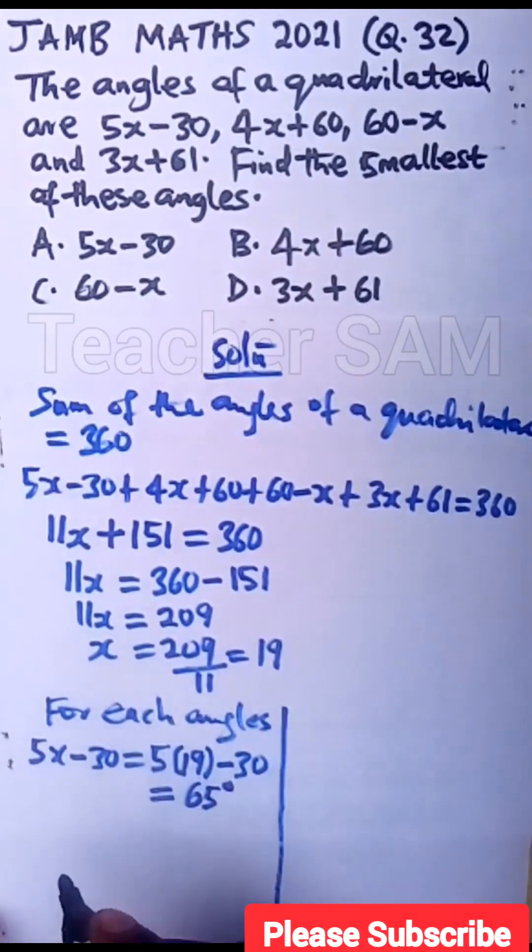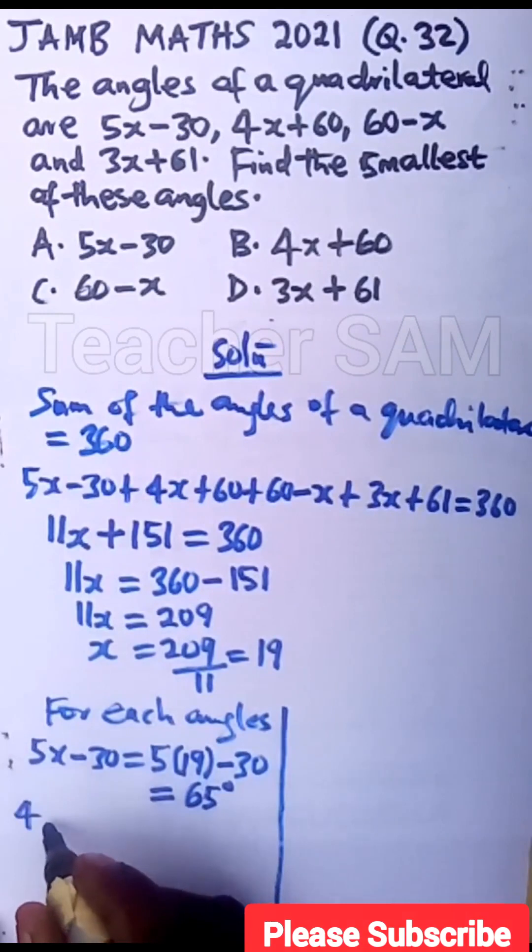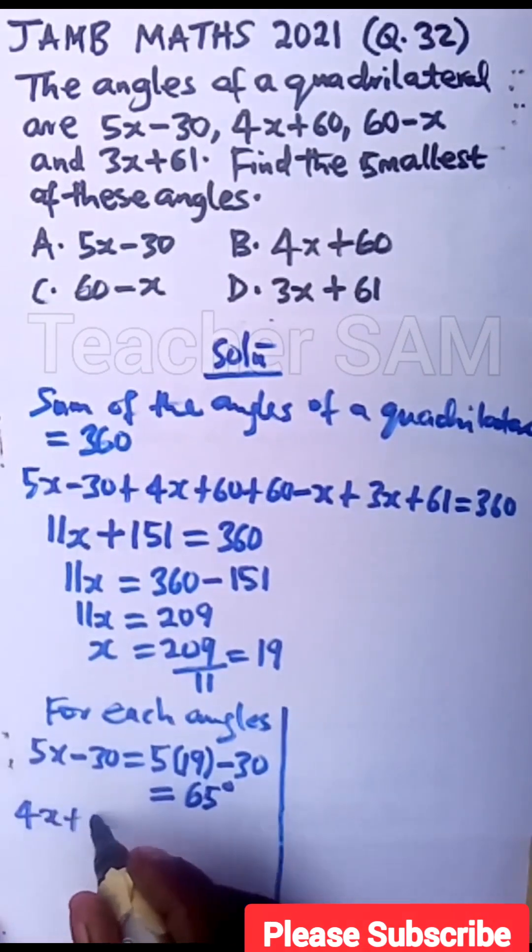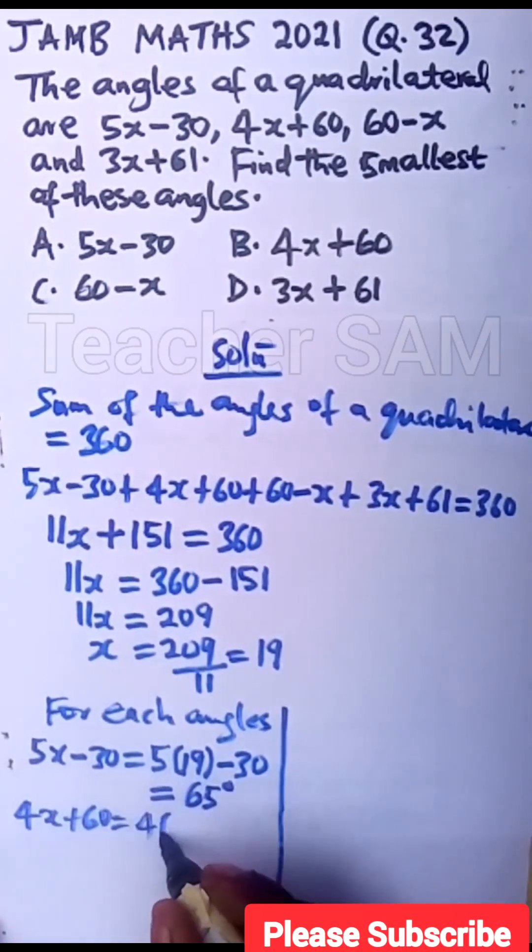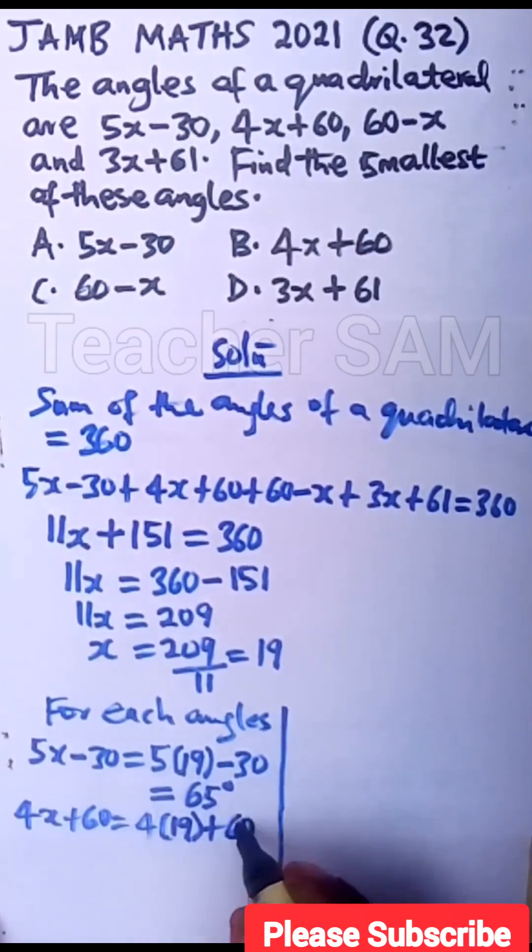Now for the second angle, we have 4x plus 60. So that will give us 4 times 19 plus 60. If you do that correctly as well, you have 136.